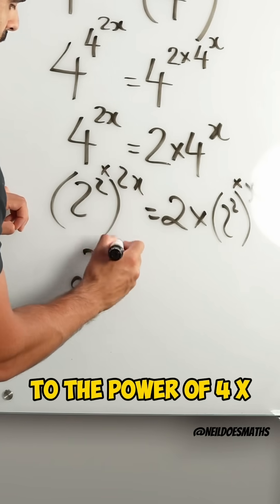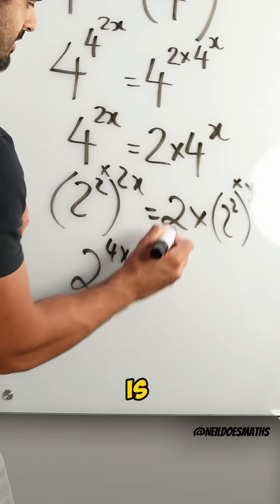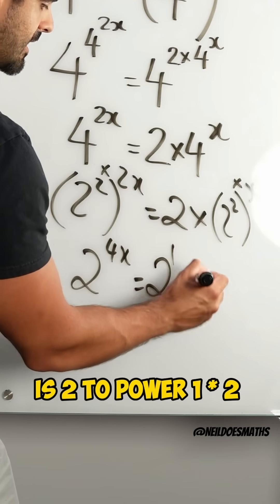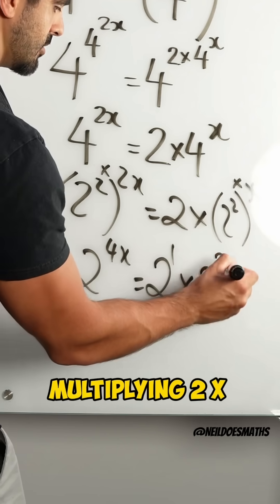So we have 2 to the power of 4x. Yeah, 2 times 2x is 2 on its own is 2 to the power of 1 times 2. Remember, we're multiplying 2x.